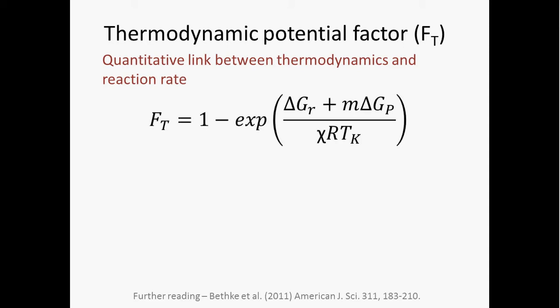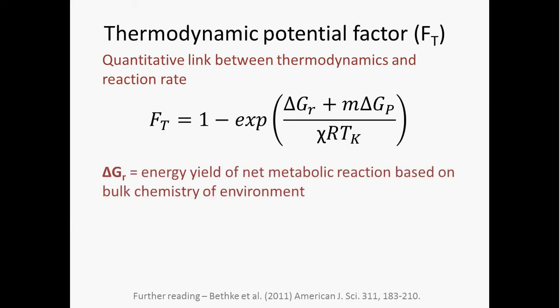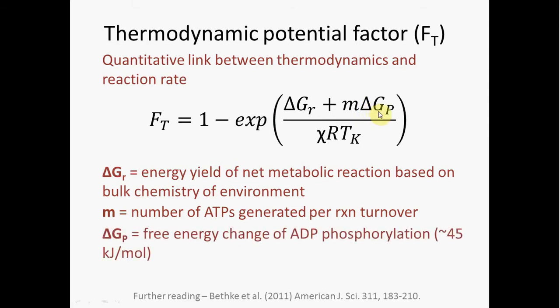And so when you expand that term, this is what you get. You see that delta G of the reaction shows up there - that's just the energy yield of the net metabolic reaction. We have this M, which is the number of ATPs generated per reaction turnover. Delta G sub P is the free energy change of ADP phosphorylation. Chi is the number of times that the rate-limiting step occurs. And then of course we have the ideal gas constant and temperature there in degrees Kelvin.